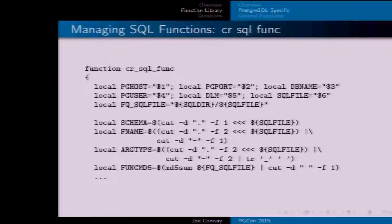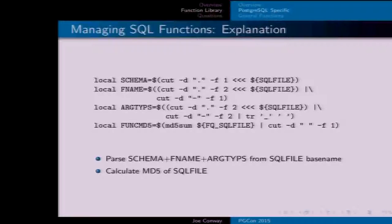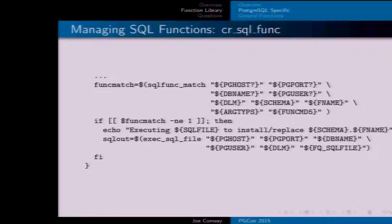The file name encodes the schema, function name, and arg types separated by dashes. The bash function uses `cut` to parse those pieces out of the SQL file name, then does an `md5sum` of the actual SQL file. If it doesn't find a match in the catalog, it executes the file using the file-execution function — which does the CREATE OR REPLACE — so before you use the function you can ensure the correct version already exists.